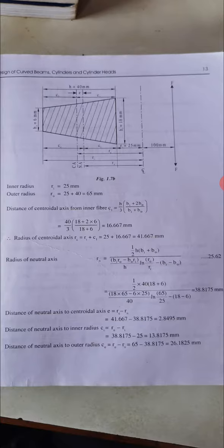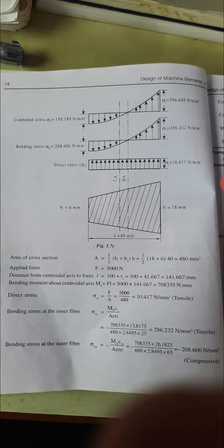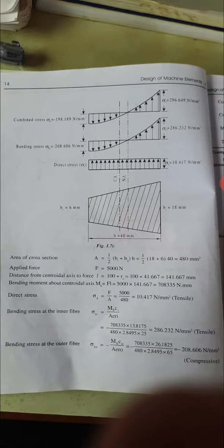Area of section = (BI + BO)/2 × H = 480mm². Force is 5000 Newton. L = 100 + RC = 141.67mm.